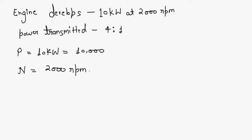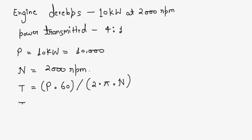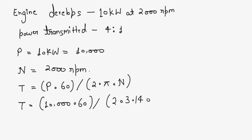We can find the torque using the formula: torque T equals P multiplied by 60, divided by 2 times pi times n. So T equals 10,000 multiplied by 60, divided by 2 times 3.14 times 2000. So T equals 954.93 Nm.